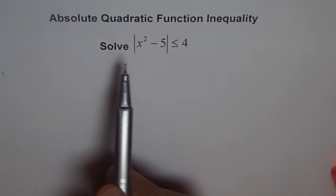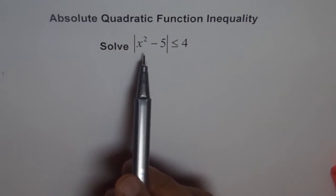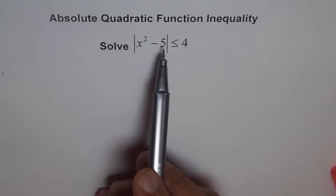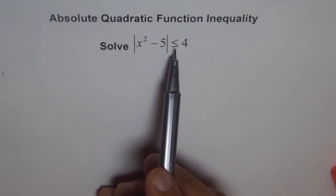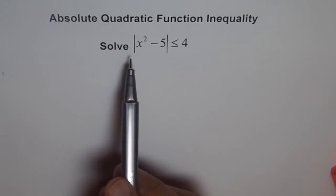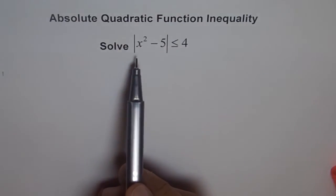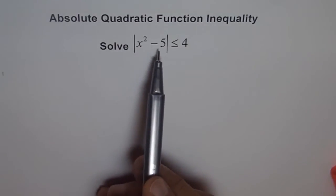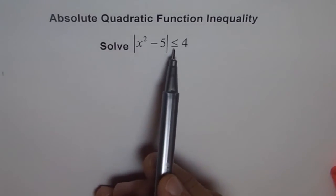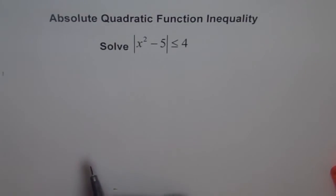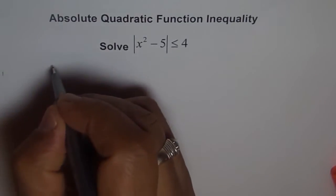Here we have an absolute quadratic function — a quadratic function with absolute value and an inequality. We need to solve: |x² - 5| ≤ 4. To understand this question we should first try to sketch it.